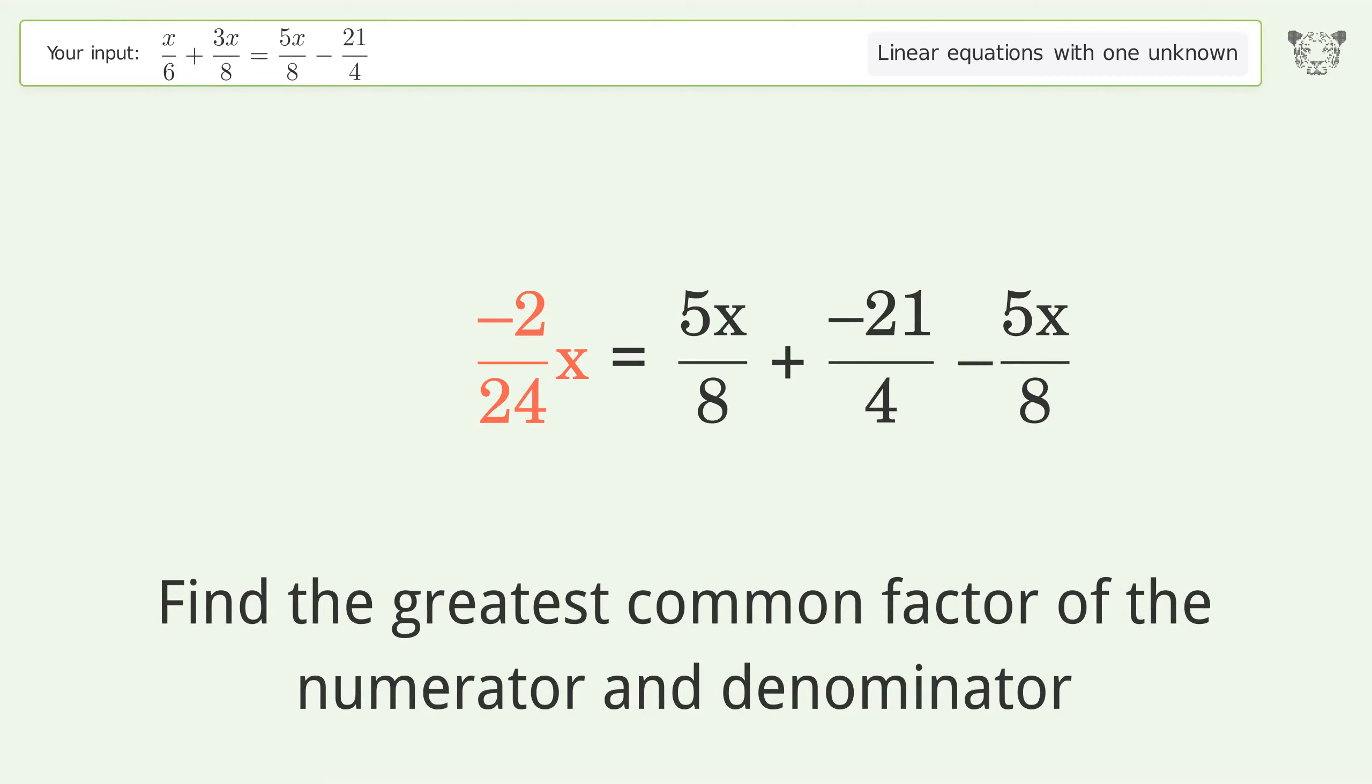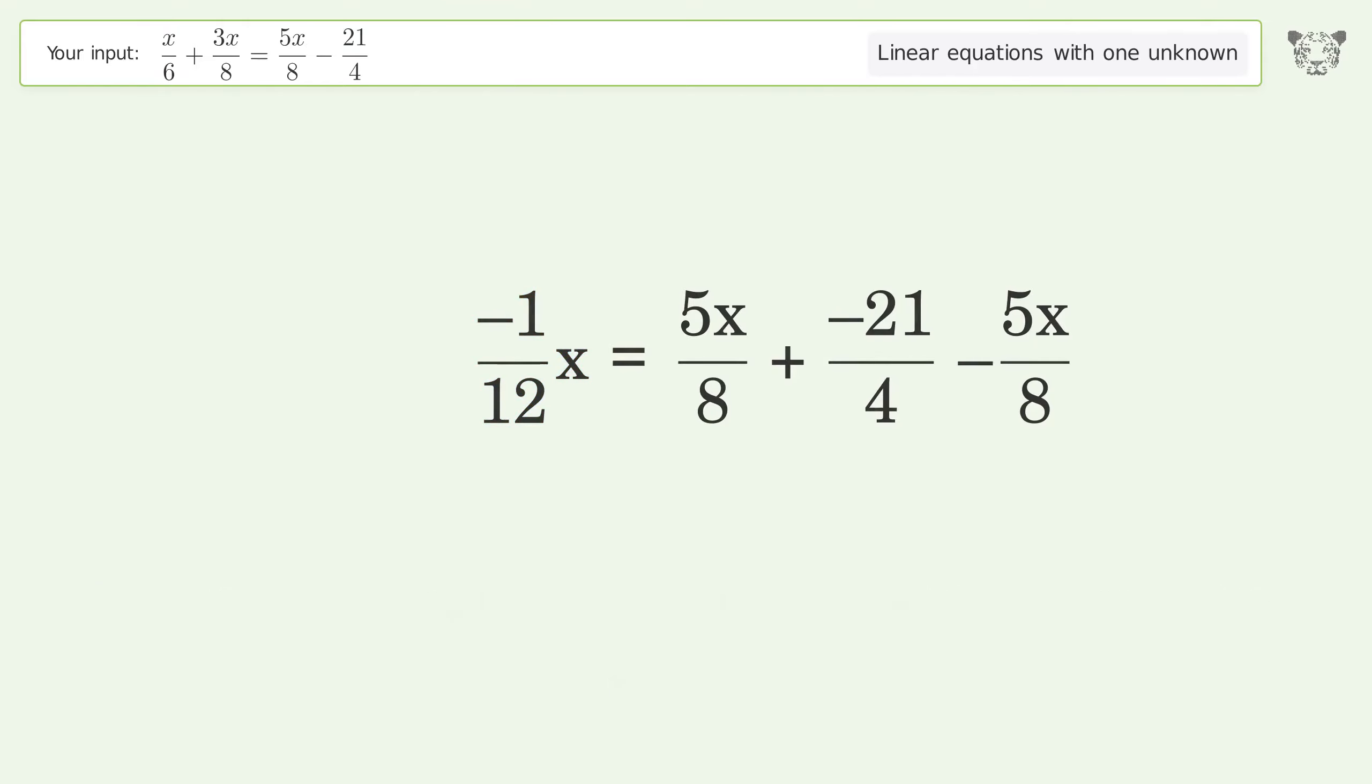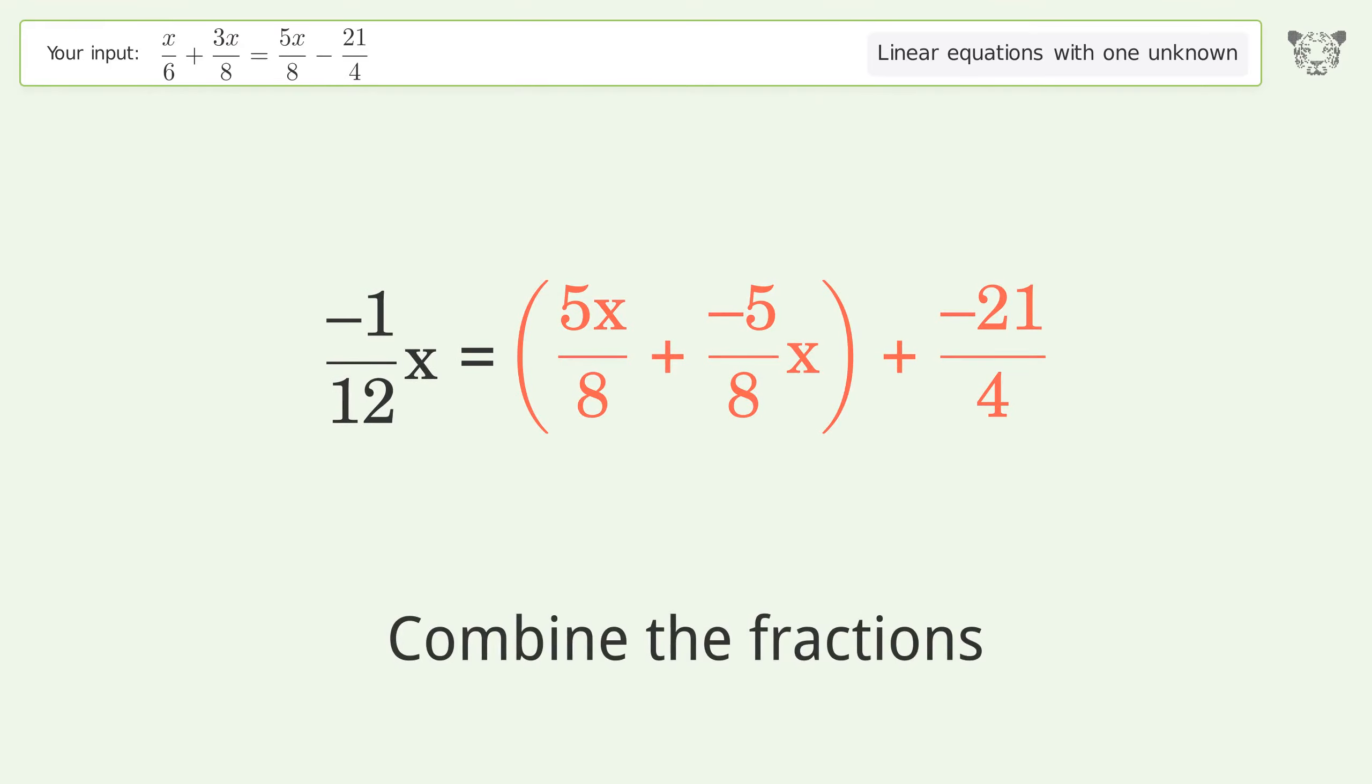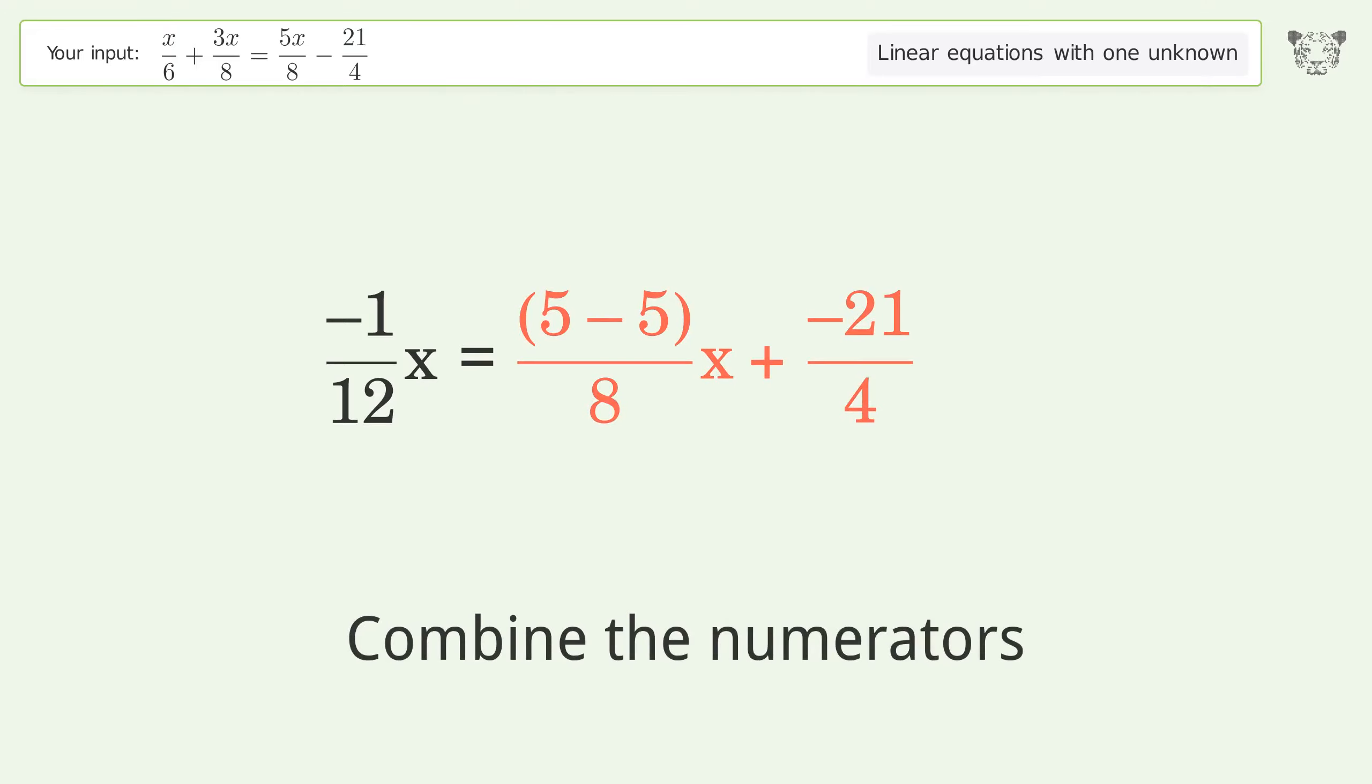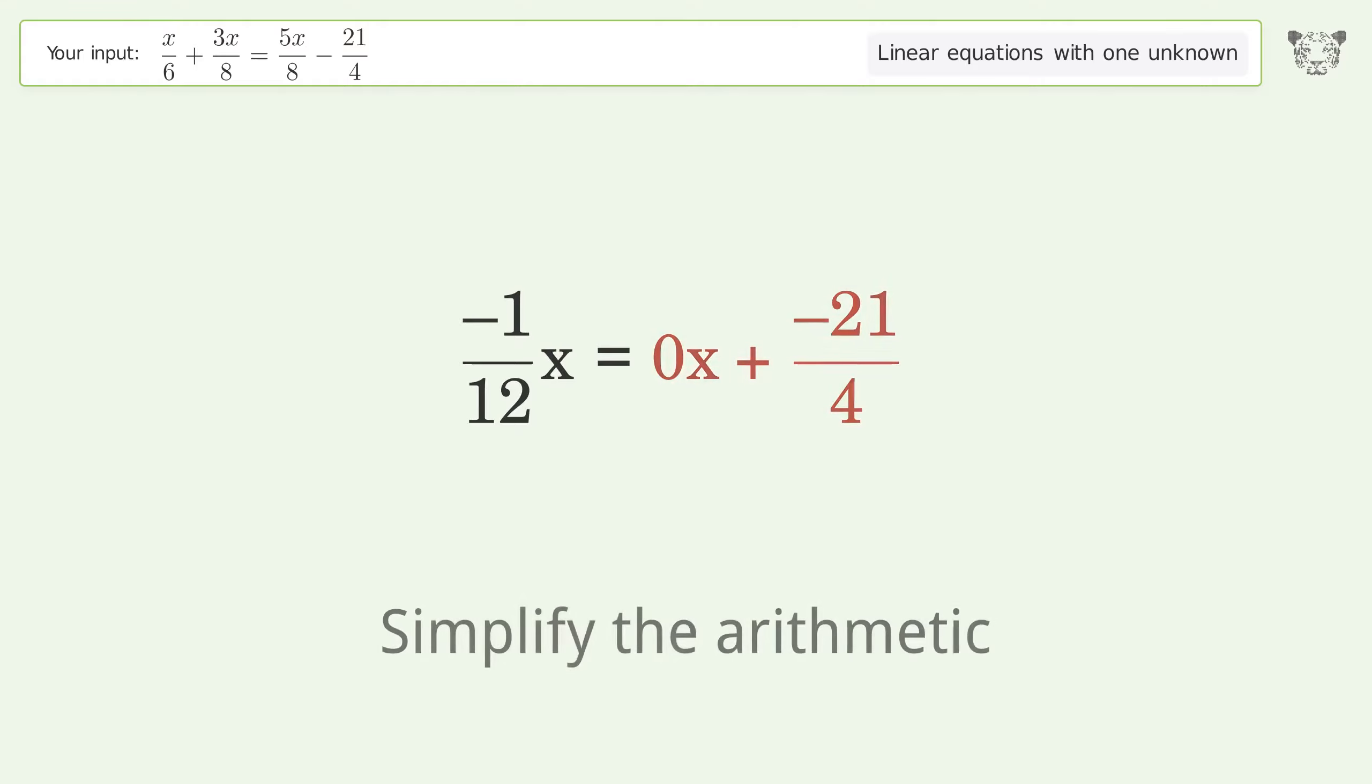Find the greatest common factor of the numerator and denominator, then factor out and cancel the greatest common factor. Group like terms, combine the fractions, combine the numerators, reduce the zero numerator, and simplify the arithmetic.